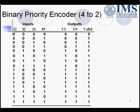Now let us consider a 4-to-2 binary priority encoder. Here we have four input lines and two output lines. There is one more output line that is valid. Valid tells us whether the output is valid or invalid. For four input lines, we have 16 possible combinations.